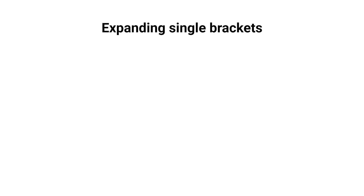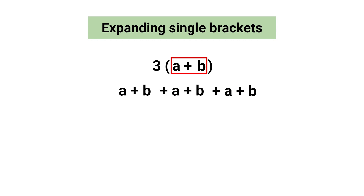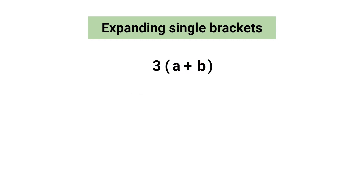In this video I'd like to discuss expanding single brackets. In the first example we have 3 next to a plus b in brackets, which means the terms within the brackets are being added three times. As described in my video on simplifying expressions, you can combine like terms, but I'm going to show you a quicker method. This method involves taking the term outside the brackets — in this case 3 — and multiplying it by each term within the brackets.